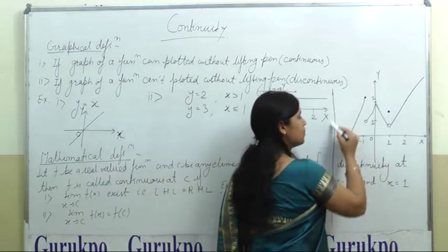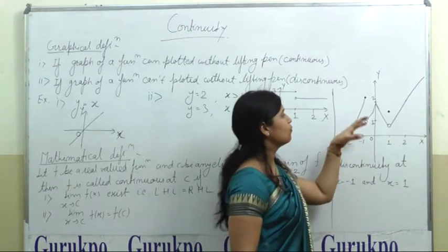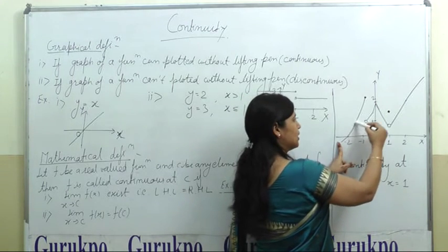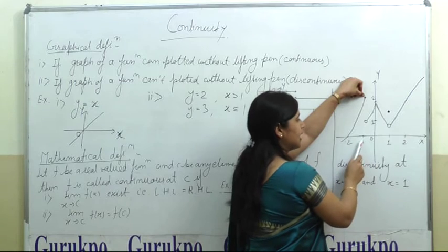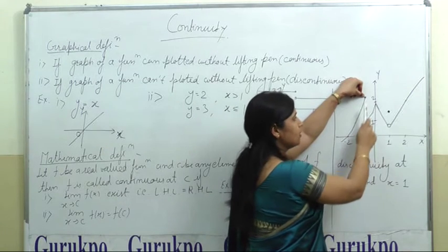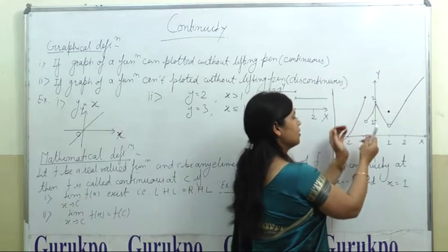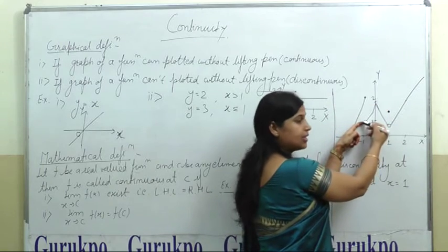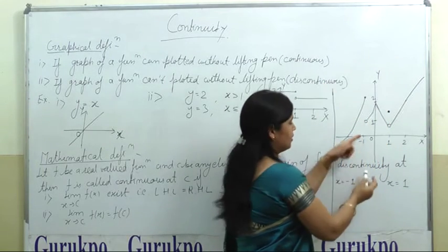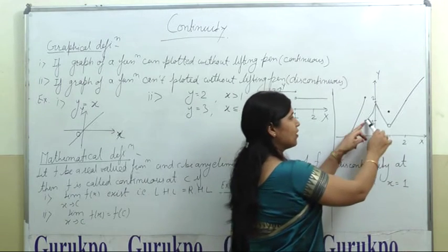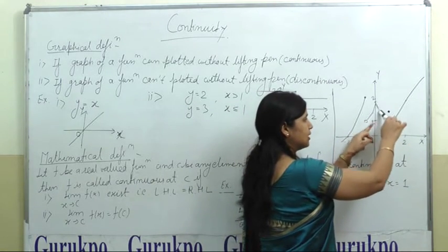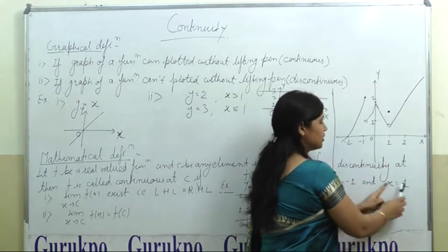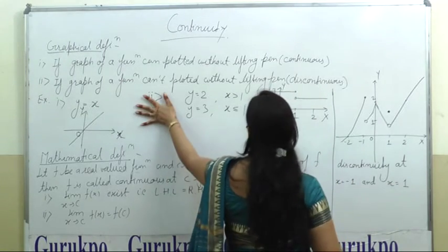Now come to this example. In this example, we want to find the points of discontinuities. From this segment to this, it is a continuous part. At x equals minus 1, your value is at this point, but when x is greater than minus 1 you have to lift your pen — that means this is a point of discontinuity at x equals minus 1. After that we go continuously, and then at another point we again have to lift the pen, giving a point of discontinuity at x equals 1, as identified with the graphical definition.